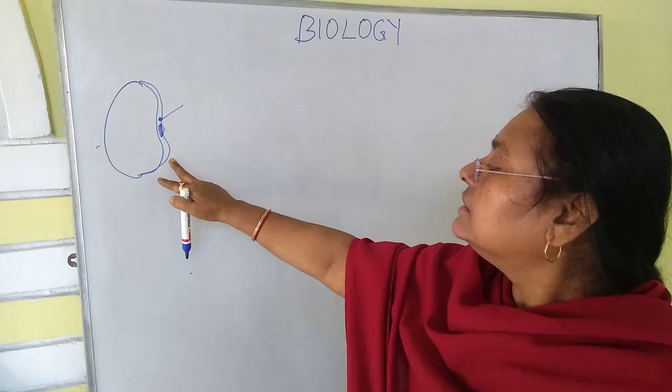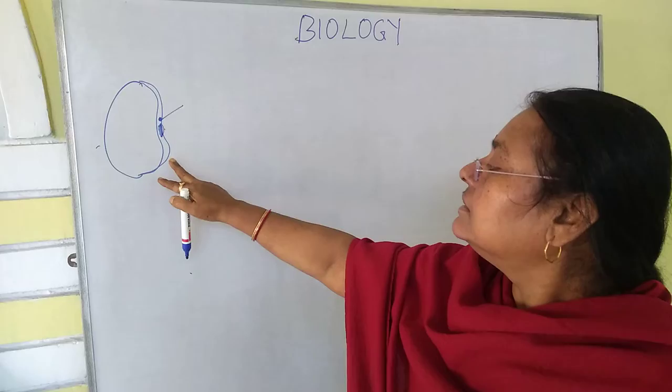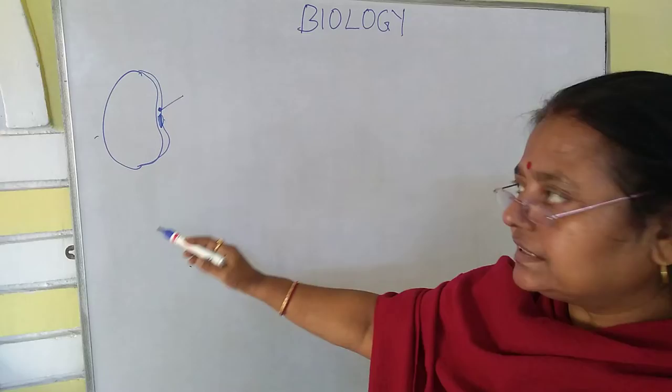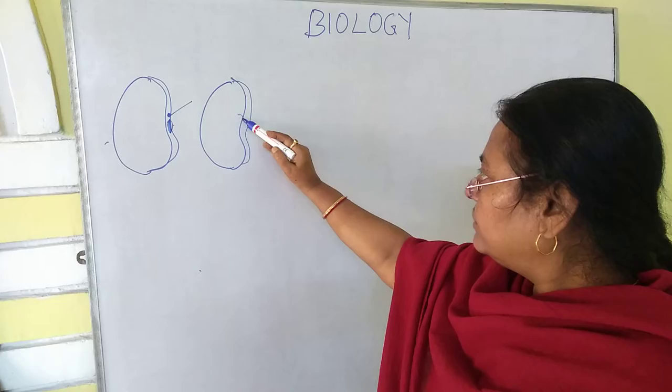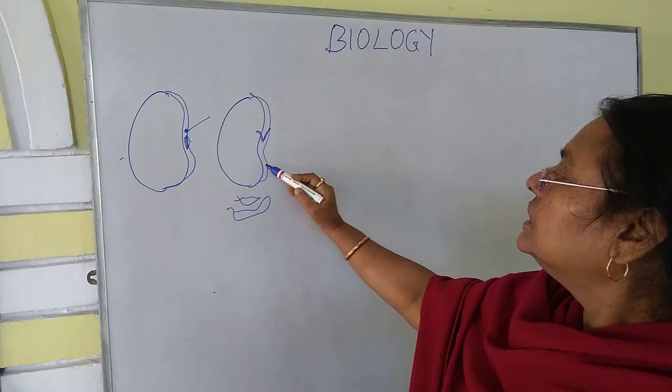Testa is darker in color and thicker; tegmen is lighter in color and thinner. After removing the testa and tegmen, you have the radicle protruding out. These two are the cotyledons.